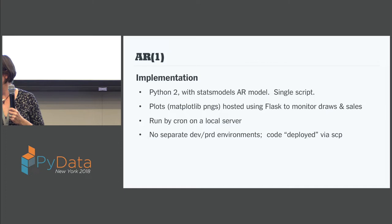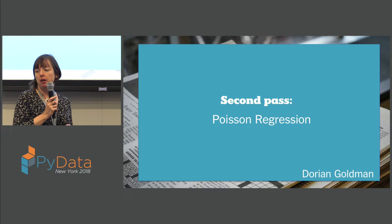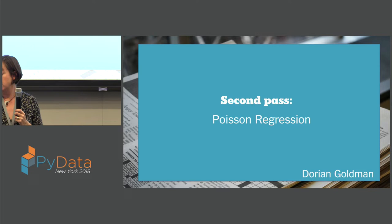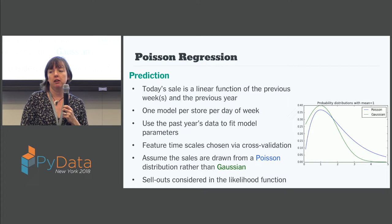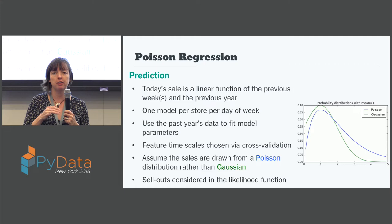The second algorithm — and this is actually the main algorithm we're still using — is Poisson regression, developed by Dorian Goldman. In many ways it's similar to the AR model in that today's sale is a linear function of previous sales, per store per day of the week. We also added a dependence on sales not just from last week but also 52 weeks ago, in case there's some seasonality to be able to capture a little bit of that in the model as well.